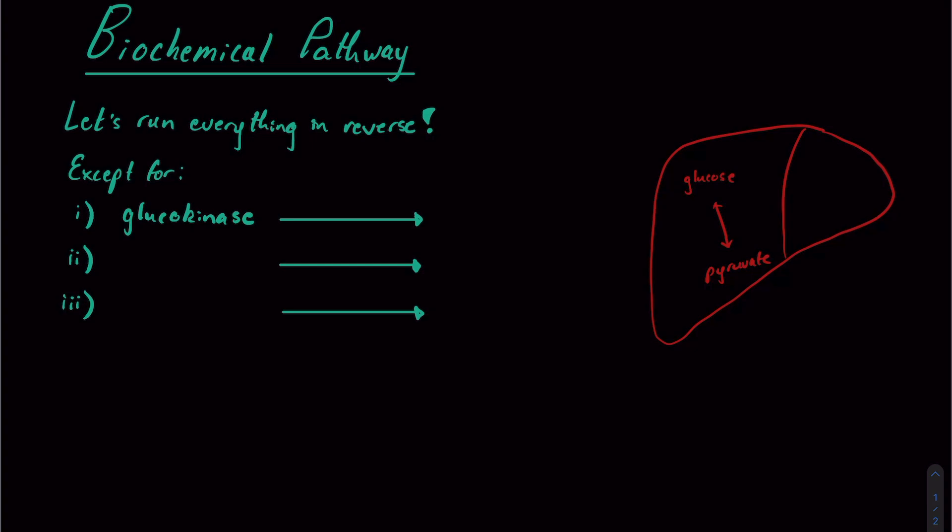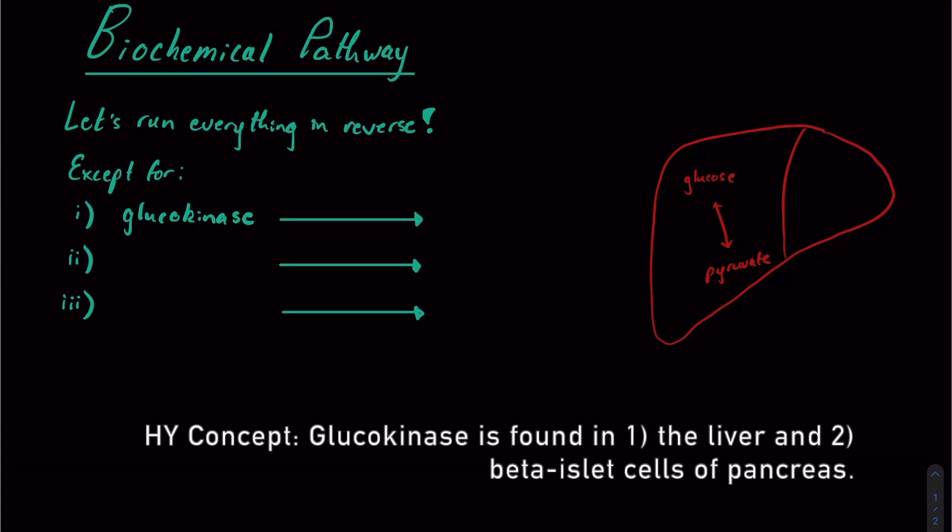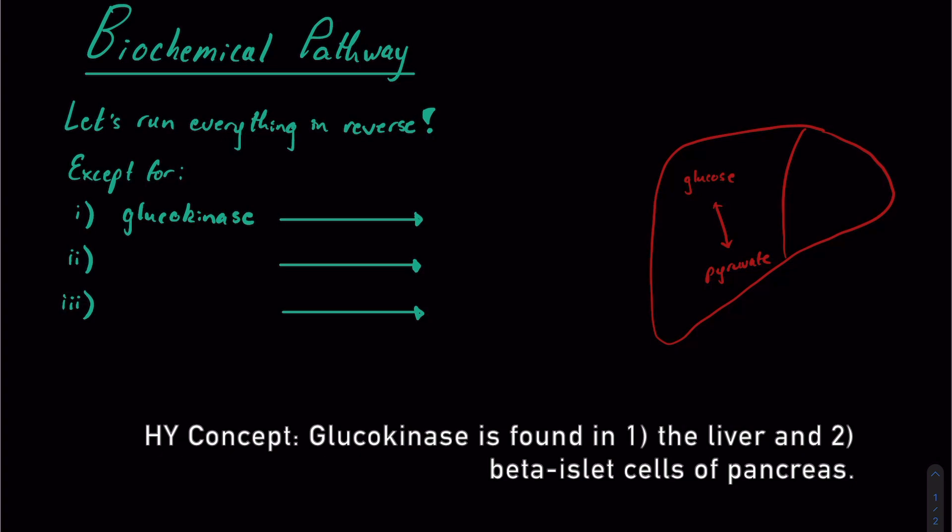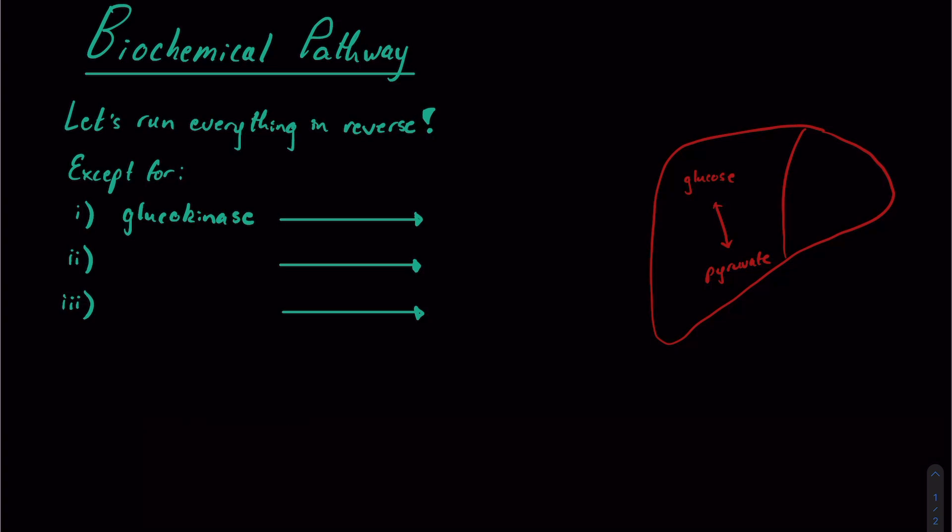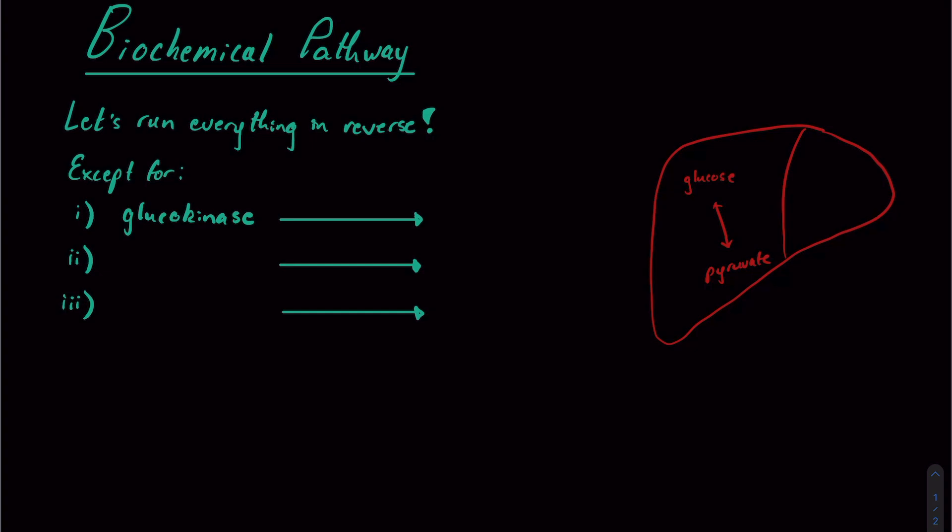The first one that is going to be irreversible in glycolysis is glucokinase. And notice that I'm saying glucokinase and not hexokinase, because glucokinase is a specific type of hexokinase that we're going to have in the liver. And that concept, the difference between glucokinase and hexokinase is important, but won't be covered in this video. Next will be the enzyme phosphofructokinase-1, or PFK1.